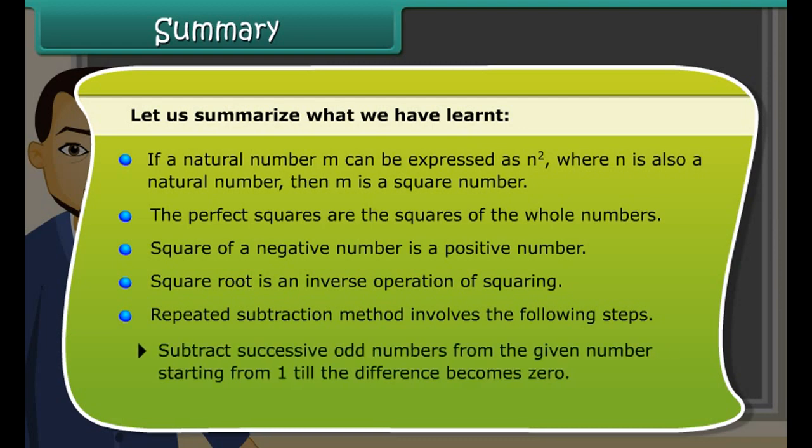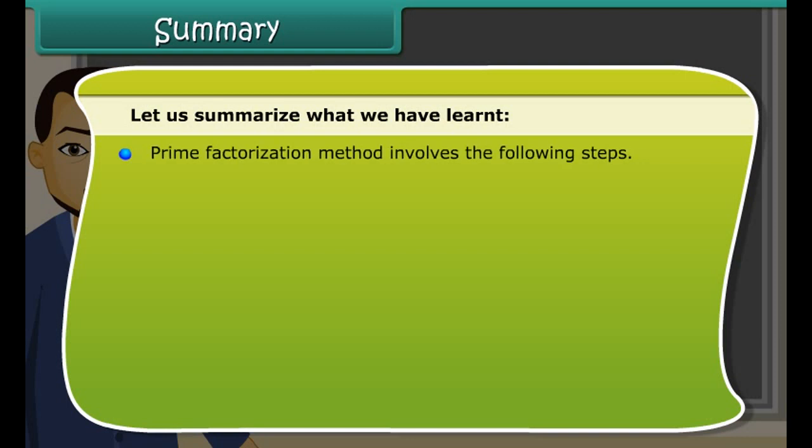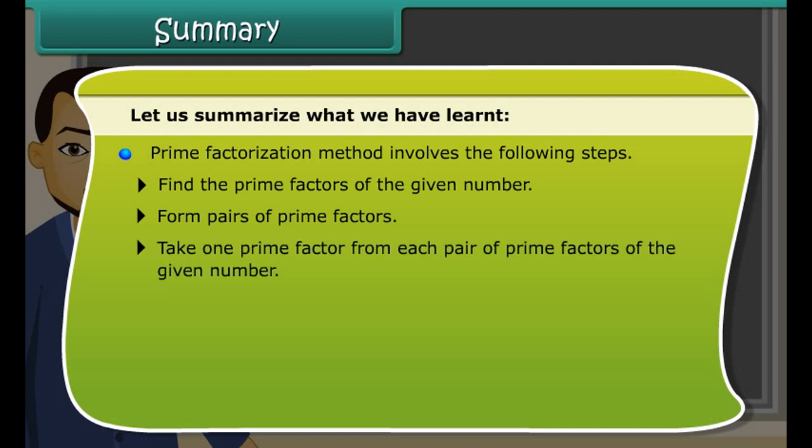Square root is an inverse operation of squaring. Repeated subtraction method involves the following steps. Subtract successive odd numbers from the given number starting from 1 till the difference becomes 0. Count the number of steps it took to get the difference as 0.